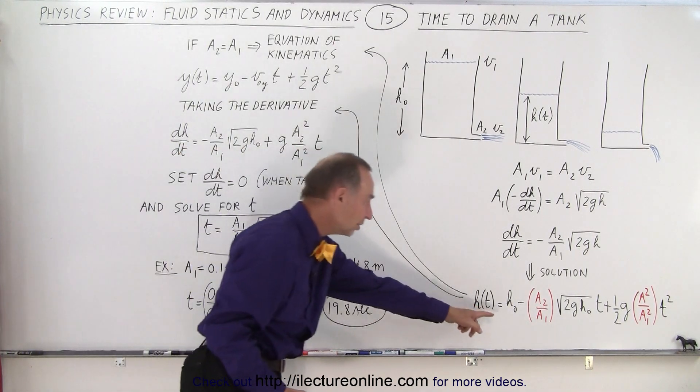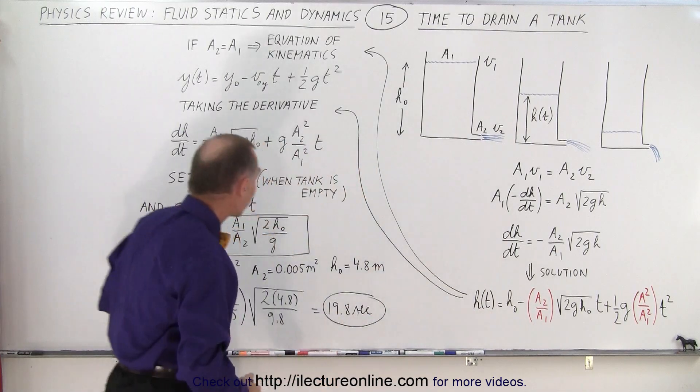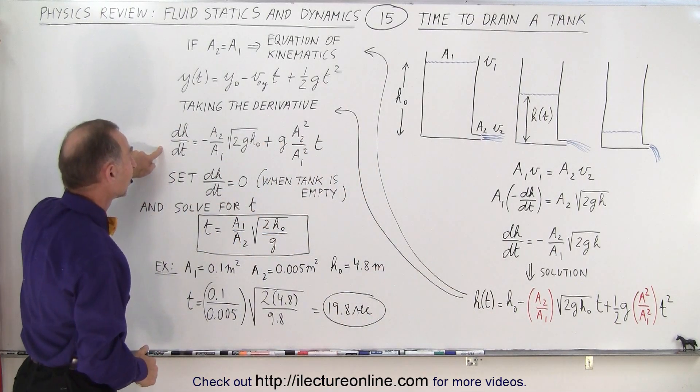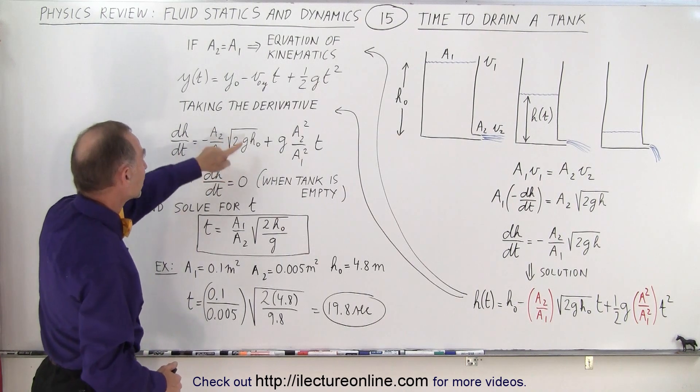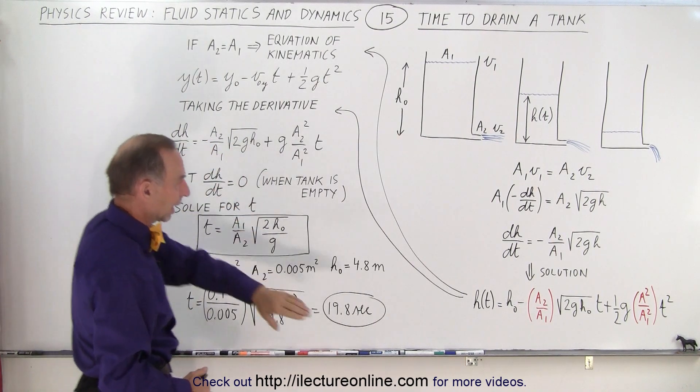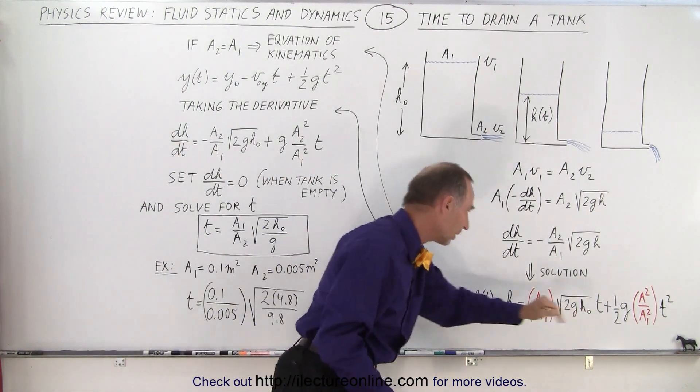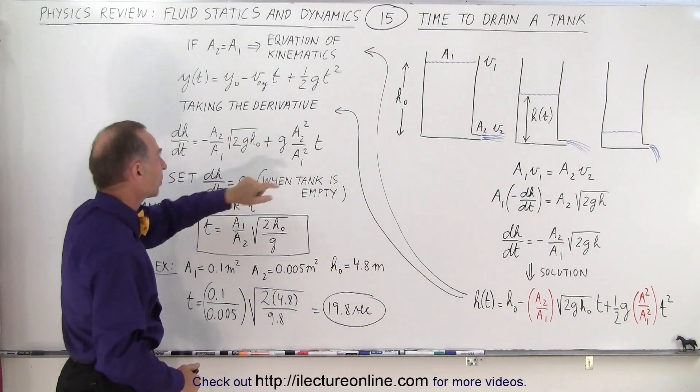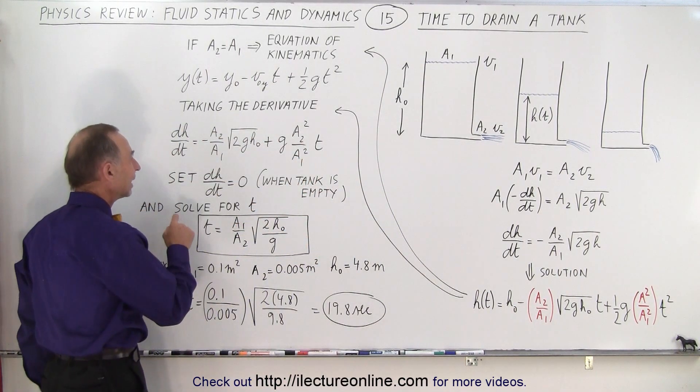So now if we take this equation and take the derivative of h with respect to time, we get this. Notice that this here is your initial velocity. When you take the derivative you end up with this, the t disappears, and here you have a single t right there.